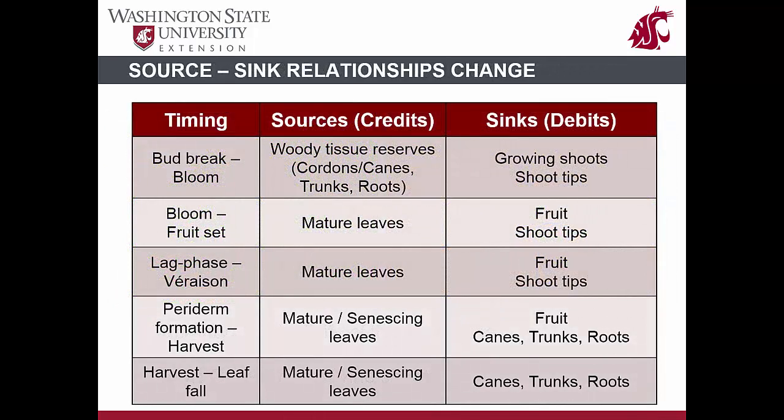How do energy sources and sinks change over the growing season? From bud break until bloom, major sources are the woody tissue reserves — energy stored in the cordons, trunk, and root system. These reserves are the only energy source for newly growing shoots, as these shoots are not old enough to provide adequate photosynthates to power their growth. If anything hinders the amount of stored nutrients coming from the woody reserves, shoots may not develop. In addition, if there are too few shoots developing relative to the energy available from reserves, those shoots will grow rapidly.